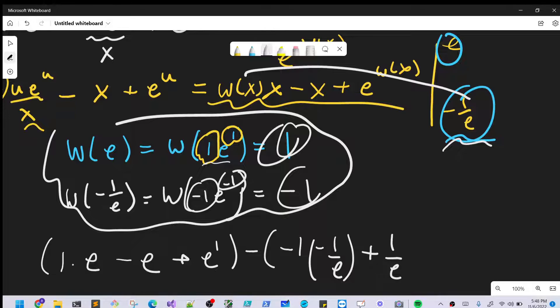And then for our last one, we have plus e, Lambert W, again, minus 1, which is minus 1 over e. And so let's see how this all shakes out.